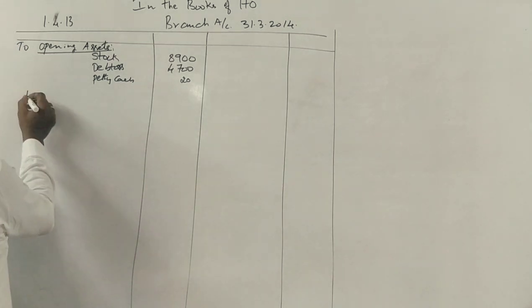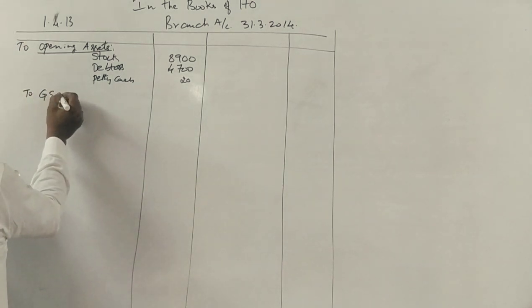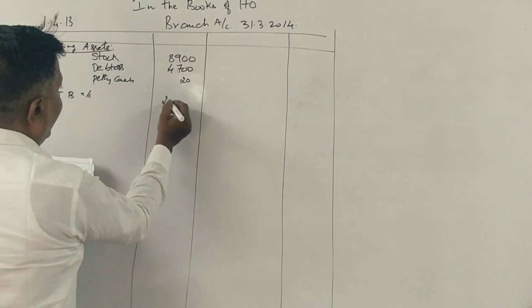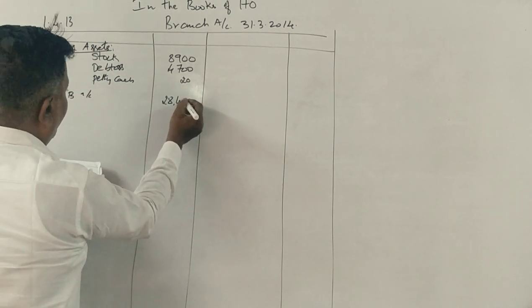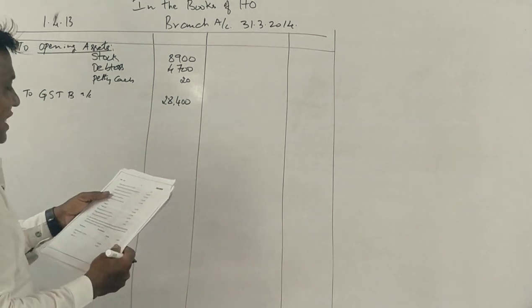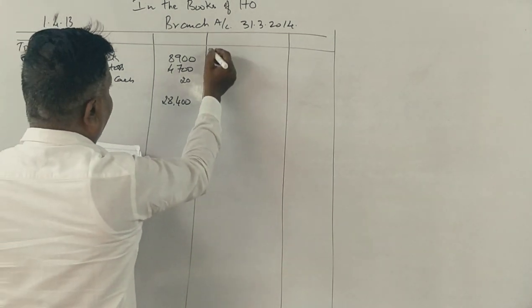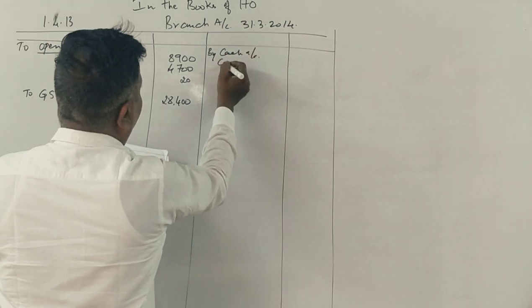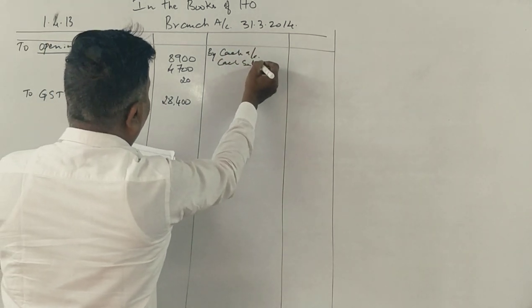Now goods sent to branch account, 28,400 to branch. Correct. Cash sales, by cash account, cash sales. What is this cash sales? 15,800.